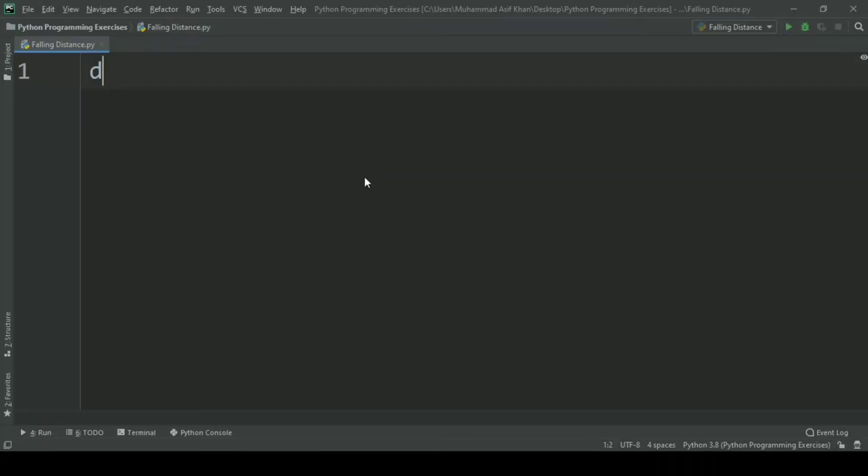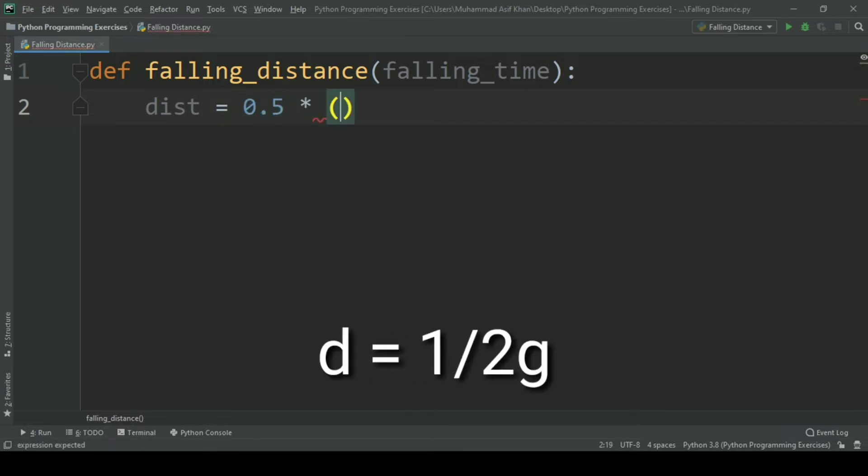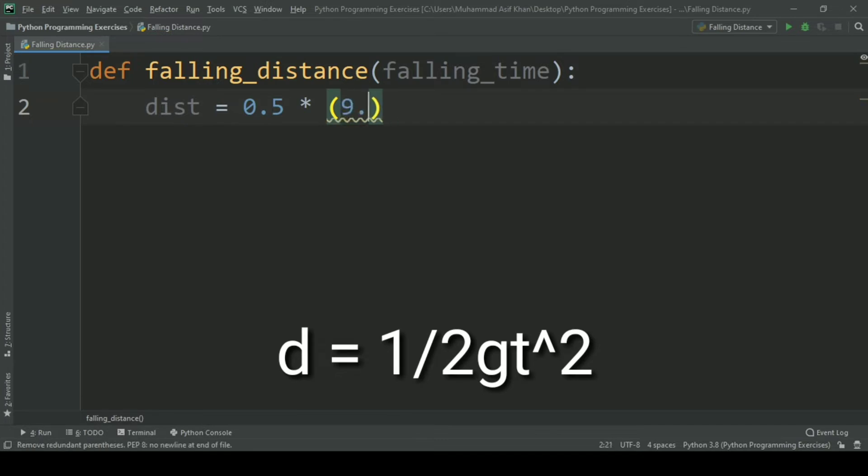Let's define a function falling_distance and give it one parameter falling_time. In this function create variable dist, calculate the distance and set it equal to 0.5 multiplied by 9.8 multiplied by falling_time squared.